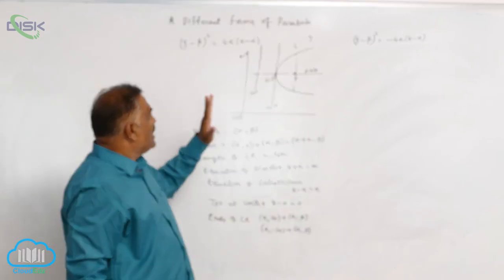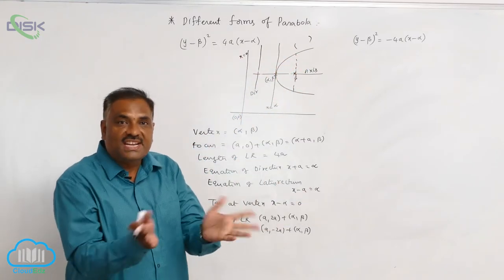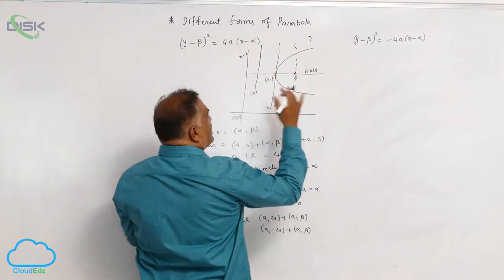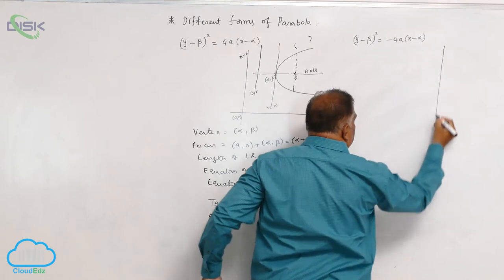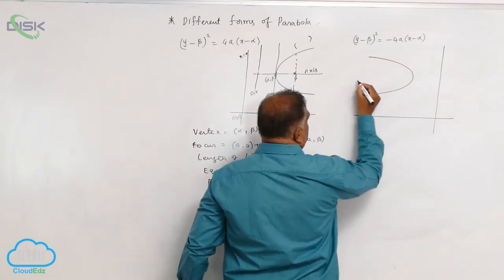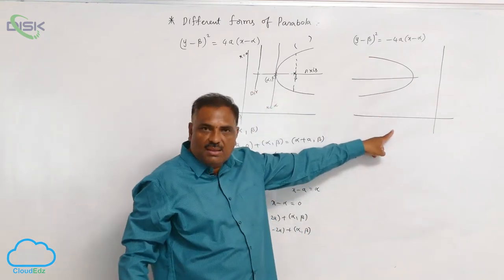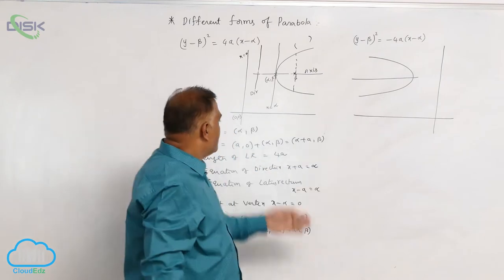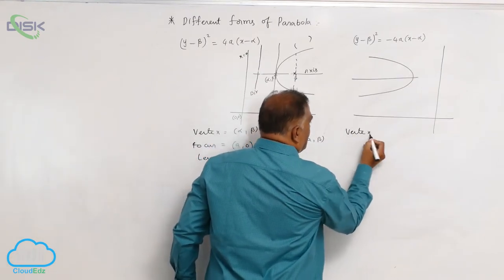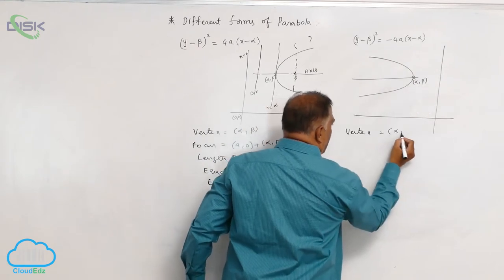Next, if this parabola is rotated by an angle of 180 degrees, then this parabola will be turned like this — it will open in the opposite direction. You can see very clearly, parabola will be like this. Now, you observe that the axis of the parabola is similarly parallel to the x-axis. So, we will write all the properties. Again, vertex will not change — it is (α, β).